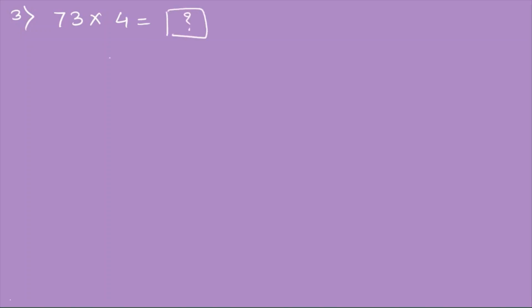Next example: 73 times 4. Write the largest number first, which is 73, and then the smaller number 4 below it, placed below the ones place in 73. Then give the multiplication symbol. Now we are ready to multiply.